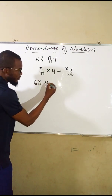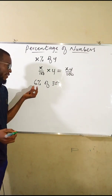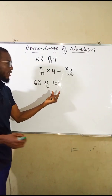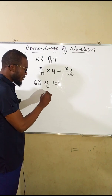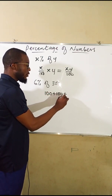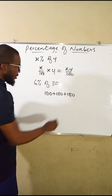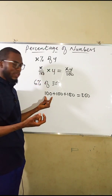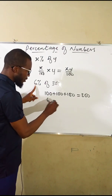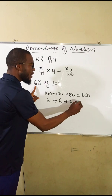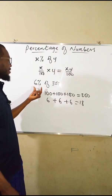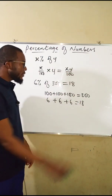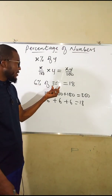First, we want to find 6 percent of 300. This means six out of every 100. We have 300 here, which can be written as 100 plus 100 plus 100. Every hundred will contain a bundle of six, so we have six here, six here, and six here. Collectively we have 18. This means that 6 percent of 300 is equal to 18.